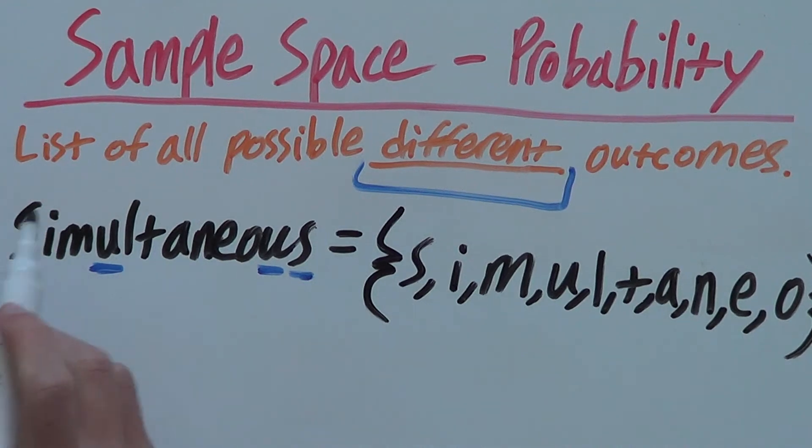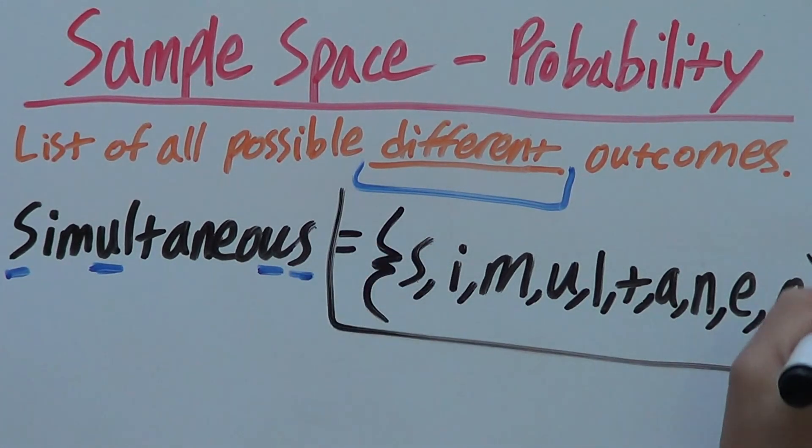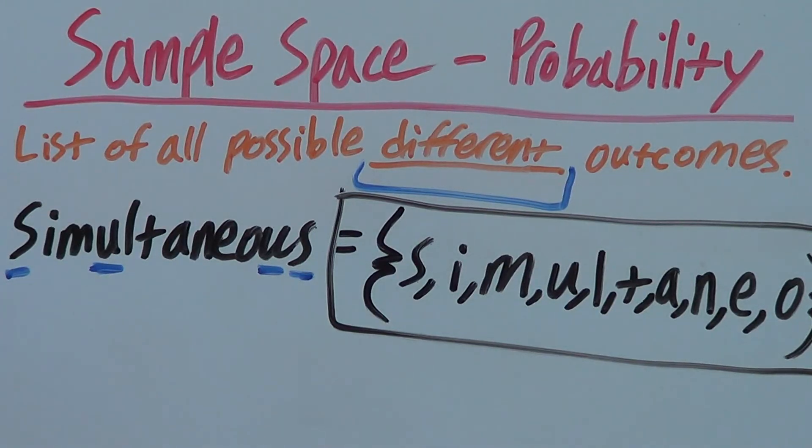So the sample space of the word simultaneous would be written like this.